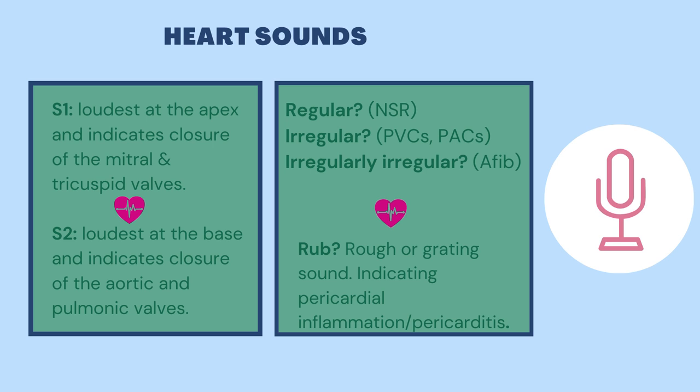When documenting your cardiac exam, you will need to note if the rhythm is regular, as in normal sinus rhythm; irregular, which could be because of PVCs or PACs; or irregularly irregular, as in atrial fibrillation.